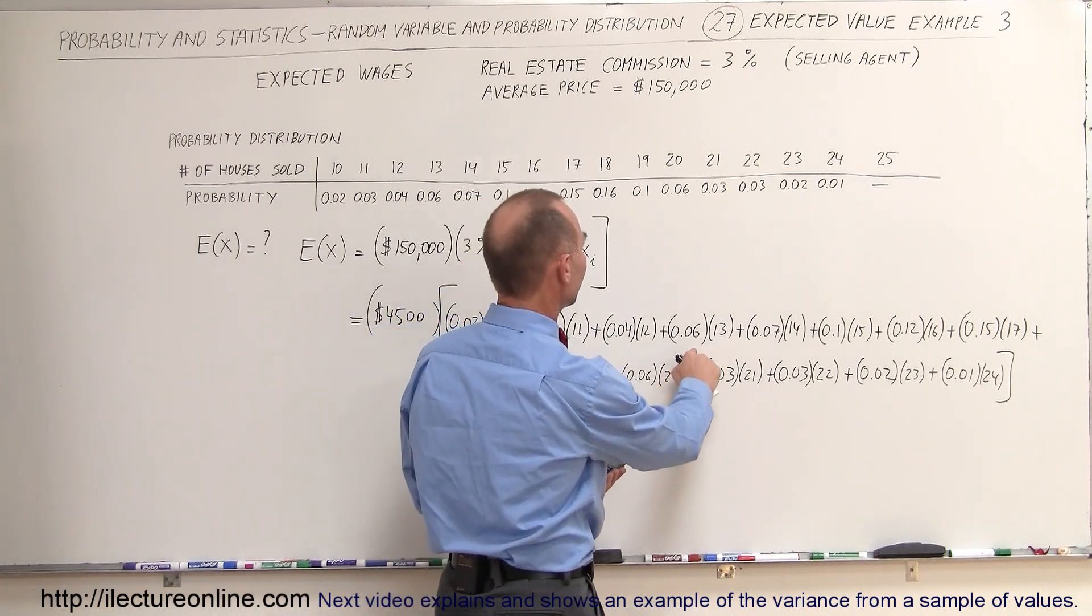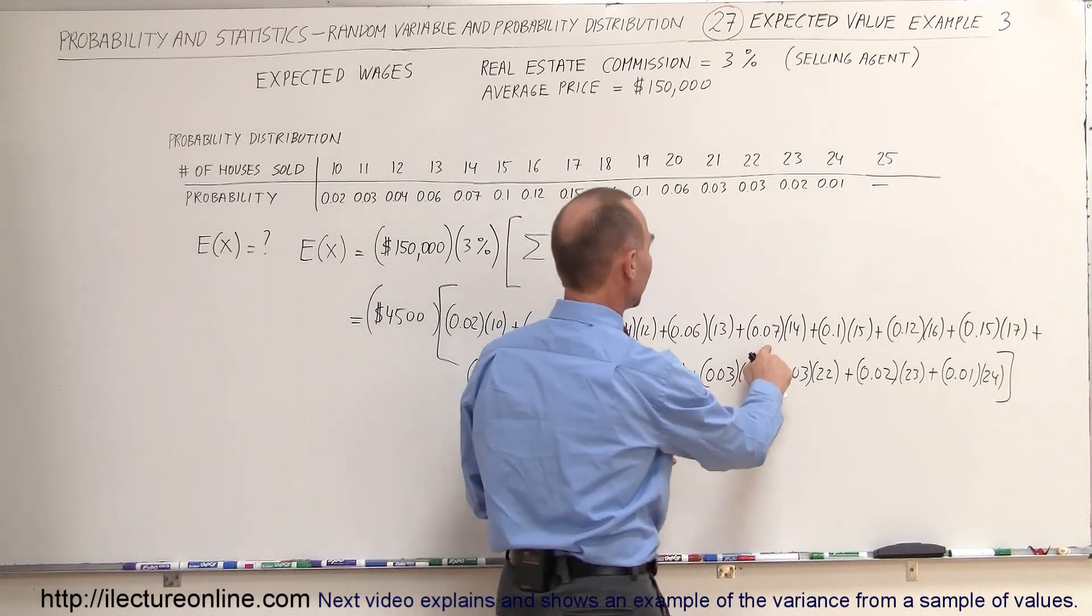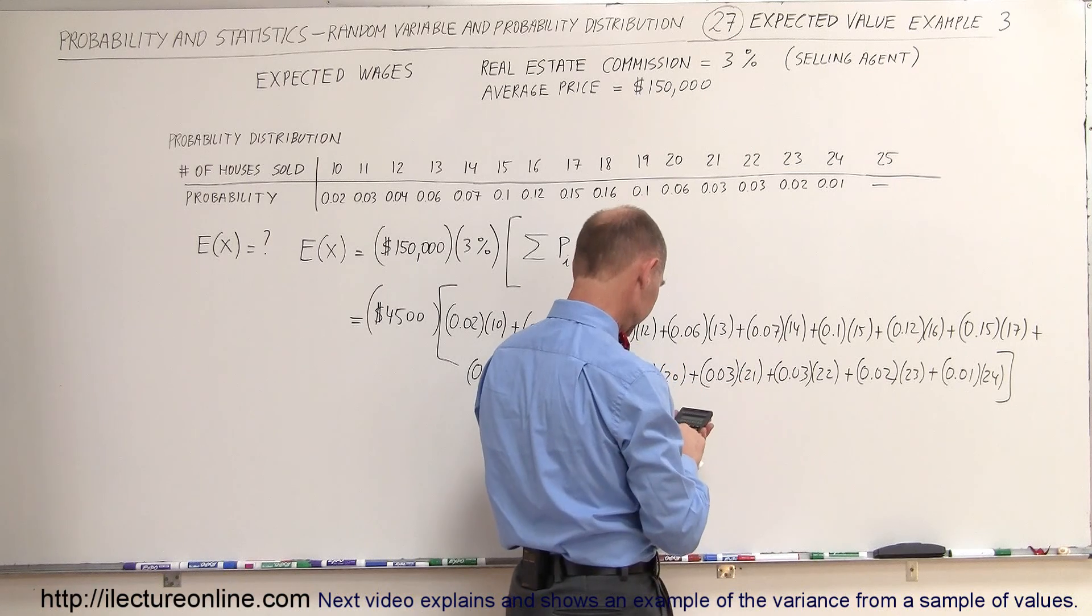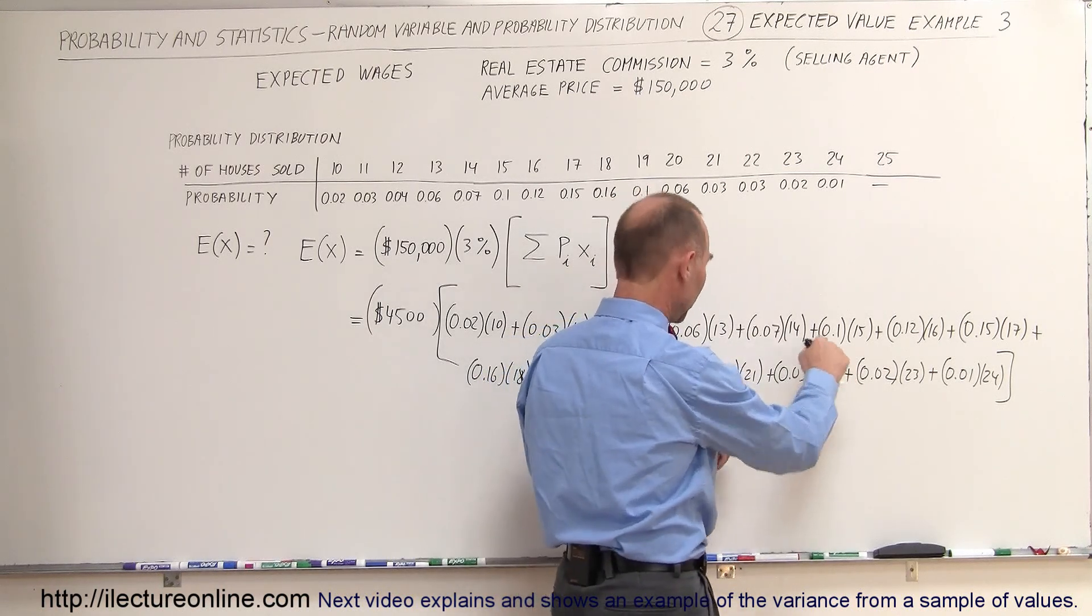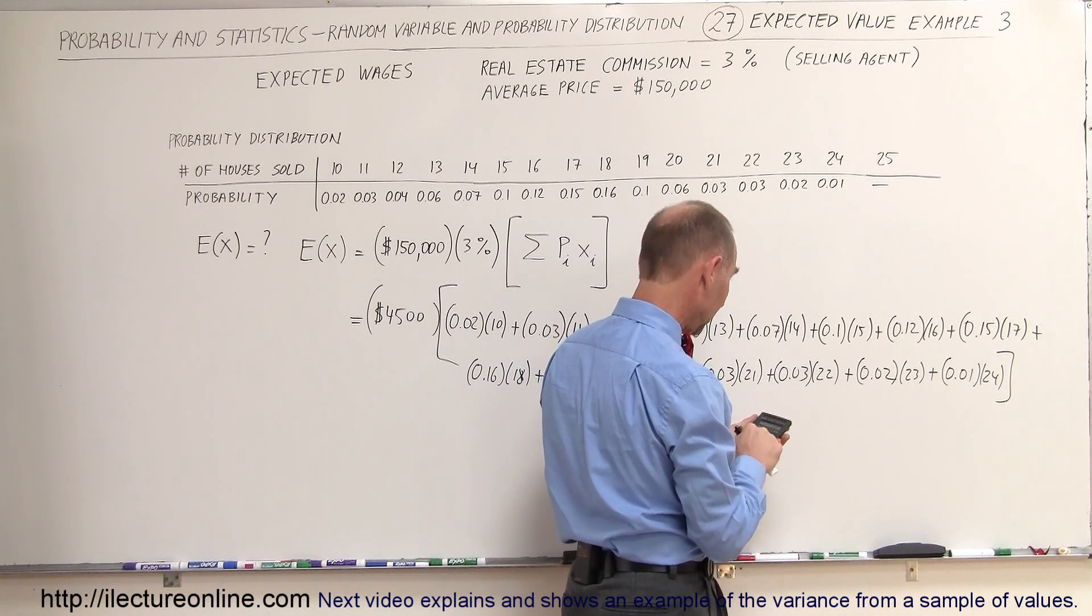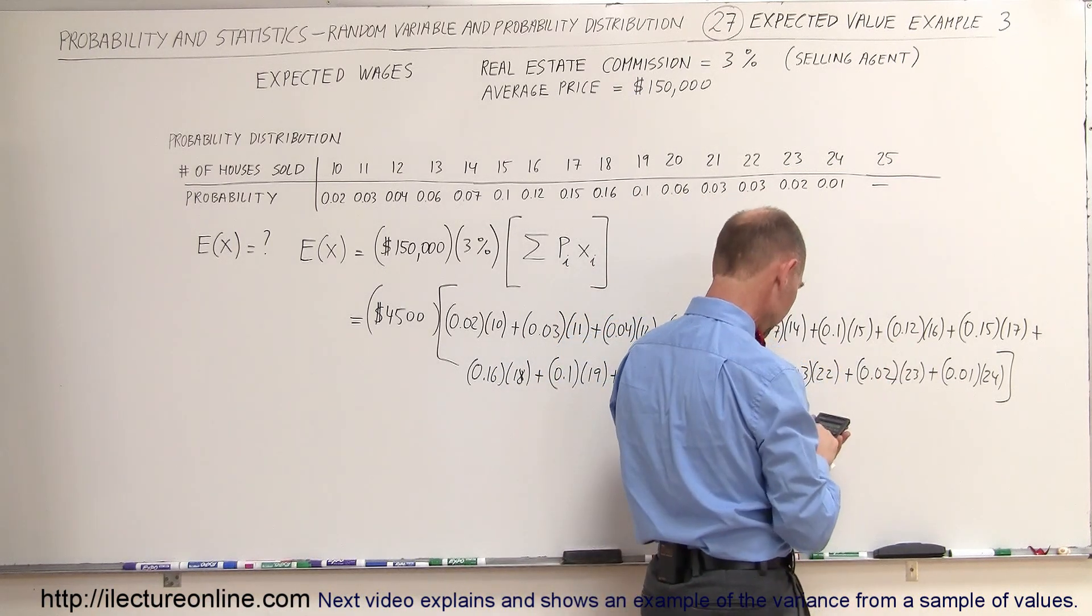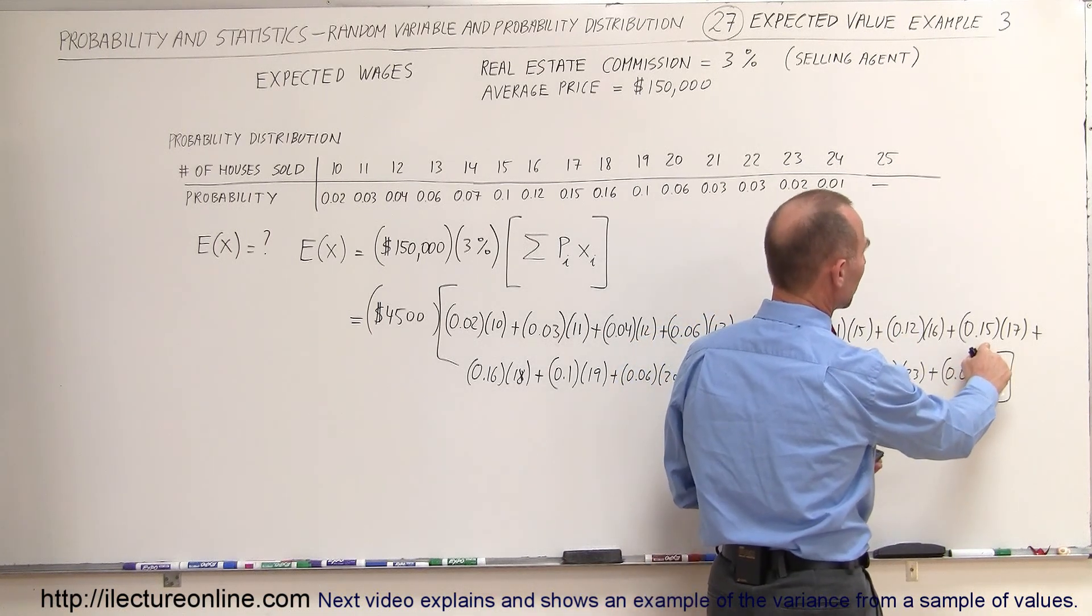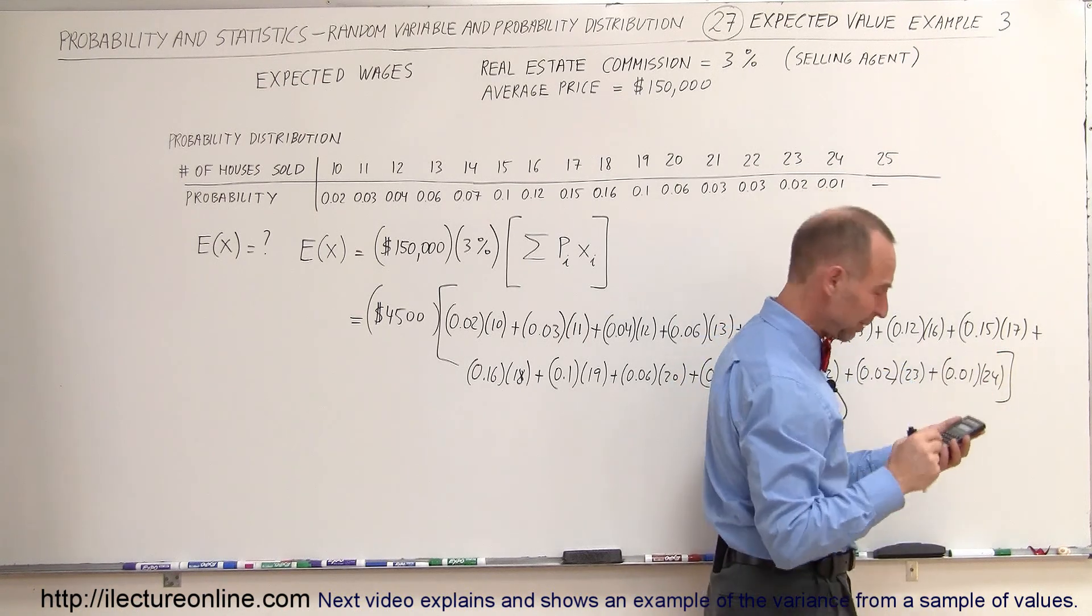and this would be, let's see, 0.78 plus, and this here would be 0.98 plus, and this would be here 1.5 plus, and this here would be 1.92 plus, and this here would be, that becomes a little bit more difficult, 1.5, I think I'll multiply that one in, plus the quantity 0.15 times 17,